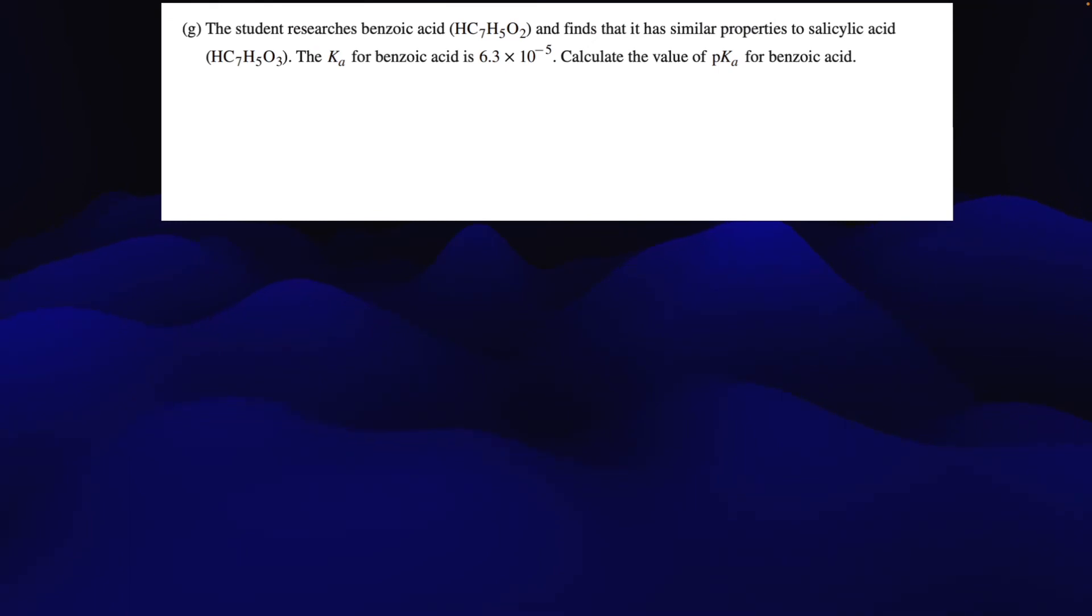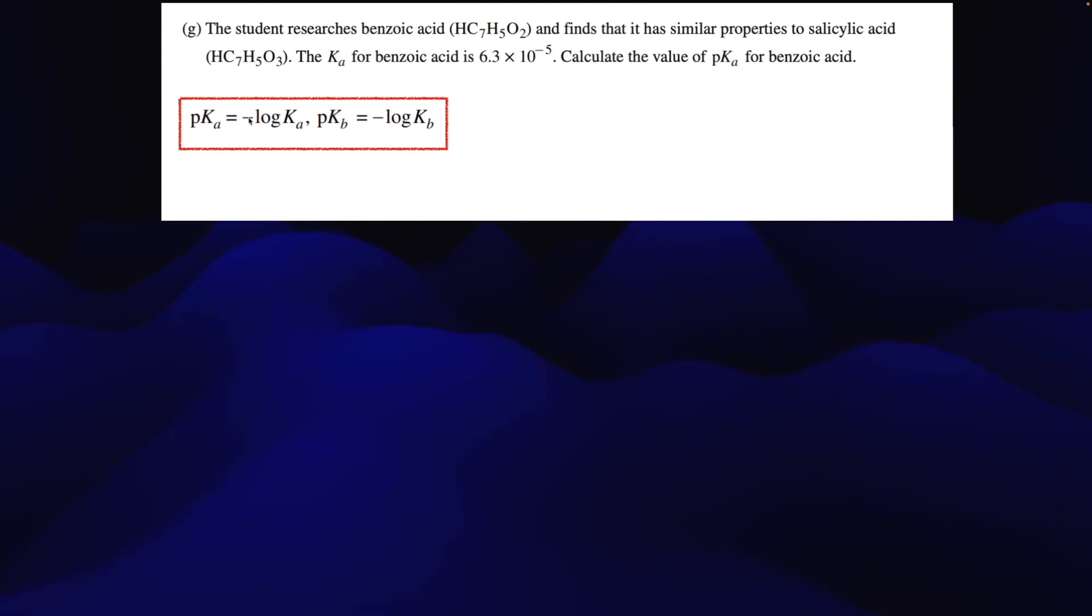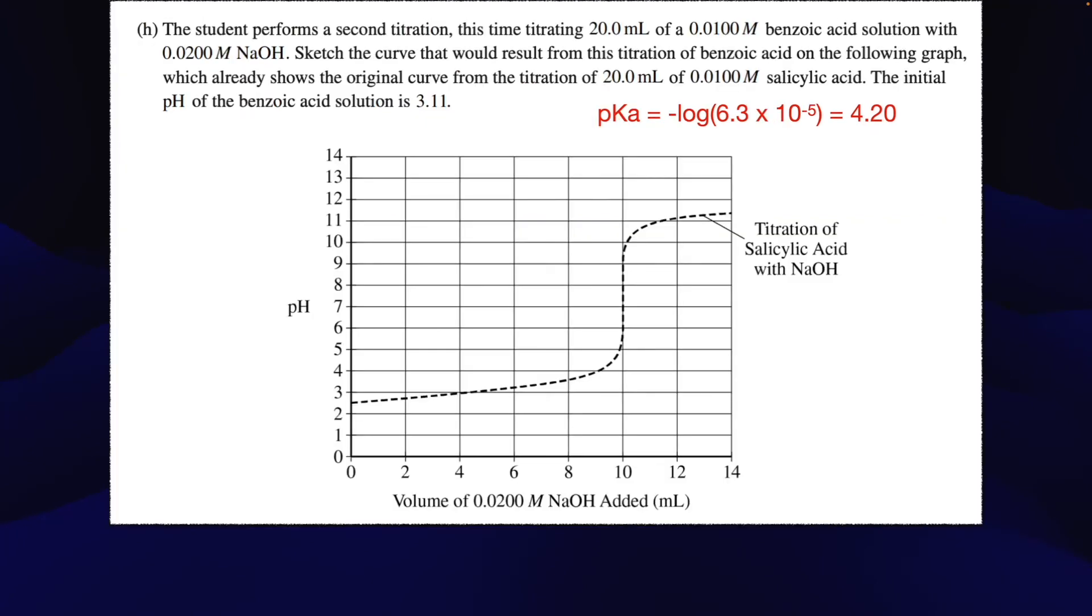All right, the student researches benzoic acid and finds that it has a similar property to salicylic acid. The Ka for benzoic acid is 6.3 times 10 to the negative 5. Calculate the value of the pKa for benzoic acid. All right, also from our formula sheet here, pKa is equal to the negative log of the Ka. They give us the Ka, take the negative log of it, that's going to give us the pKa. So it's 4.2. Okay, and that is definitely a higher pKa than the pKa on the previous slide.